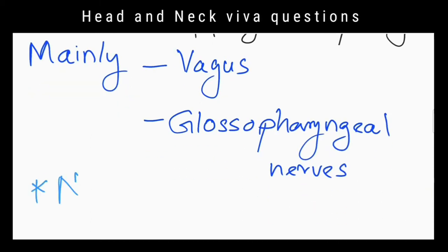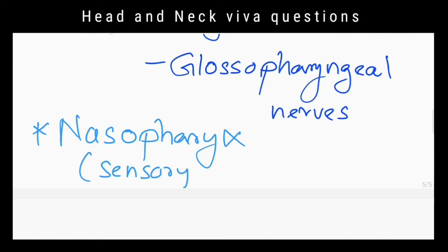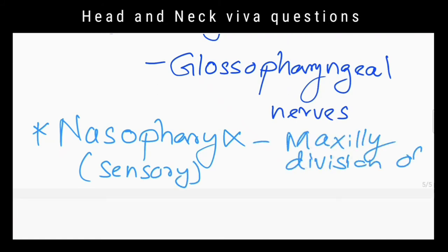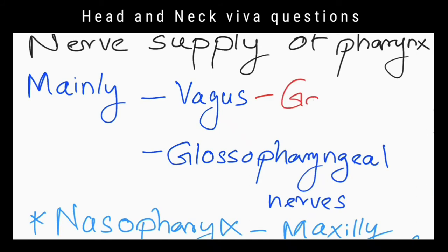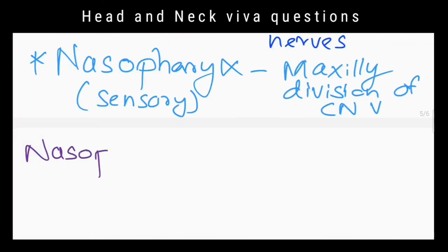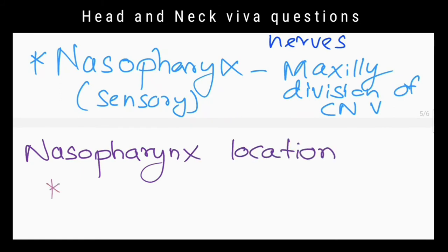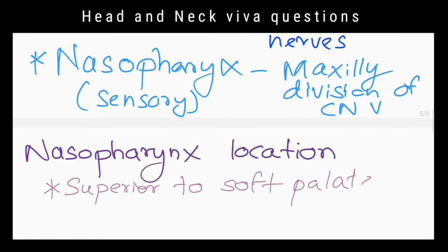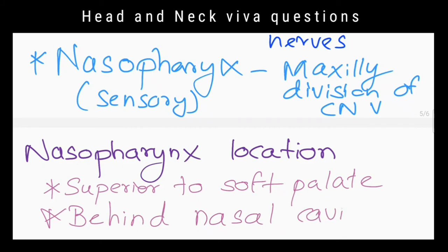The maxillary division of the trigeminal nerve supplies the sensory innervation of the nasopharynx. What reflex is used to test the vagus nerve? The gag reflex. Where are the nasopharyngeal tonsils located? Superior to the soft palate and behind the nasal cavities.